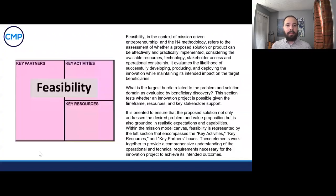So diving right into this — I know, another eye chart, as we've seen with a couple of definition slides here — but having a really good foundational understanding of what's here is really important. Feasibility in the context of mission-driven entrepreneurship and the H4 methodology refers to the assessment of whether a proposed solution or product can be effectively and practically implemented considering the available resources, technology, stakeholder access, and operational constraints. It evaluates the likelihood of successfully developing, producing, and deploying the innovation while maintaining its intended impact on the target beneficiaries. This section tests whether an innovation project is possible given the time frame, resources, and key stakeholder support, and is oriented to ensure that the proposed solution not only addresses the desired problem and value proposition but is also grounded in realistic expectation and capabilities.